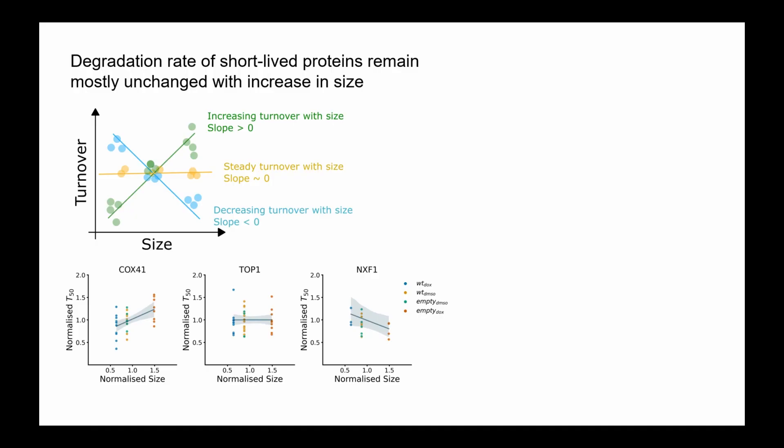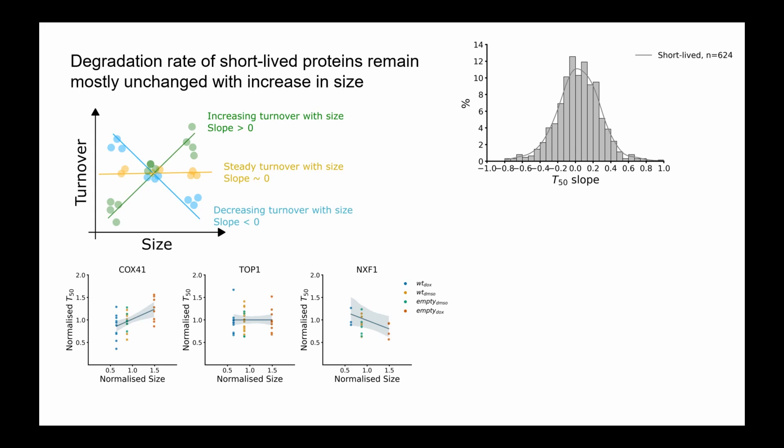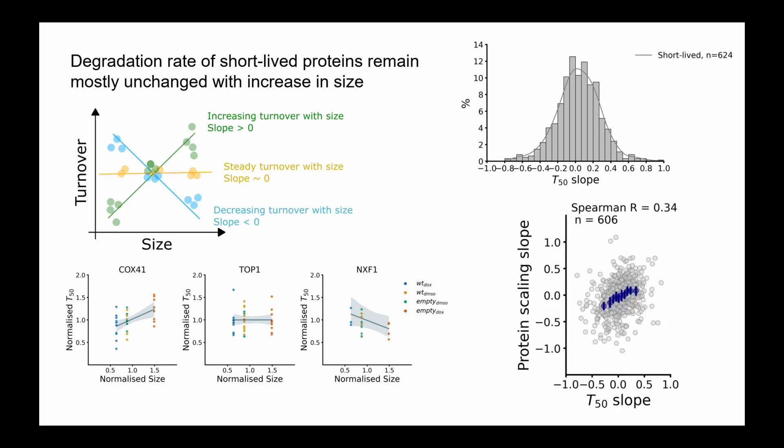We can now look at the rate of change of protein turnover with cell size. One caveat is that many proteins in these human cell lines are regulated not just by active degradation but also by cell division, so for simplicity I focused on short-lived proteins more confidently regulated by active degradation alone. When we do that, we see that most proteins do not change in their degradation rate with increase in cell size. The contribution of protein turnover to protein scaling is a moderate amount — not nothing — but definitely less than the transcript scaling slope.